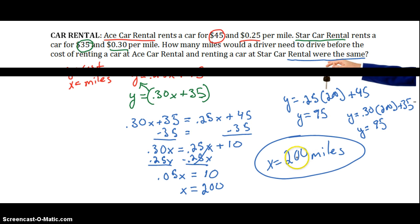So there we can see if we go 200 miles in Ace Car, it costs $95. If we go 200 miles in Star Car, it costs $95. So 200 is our final answer.